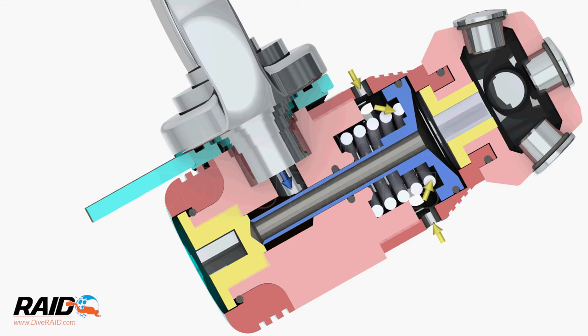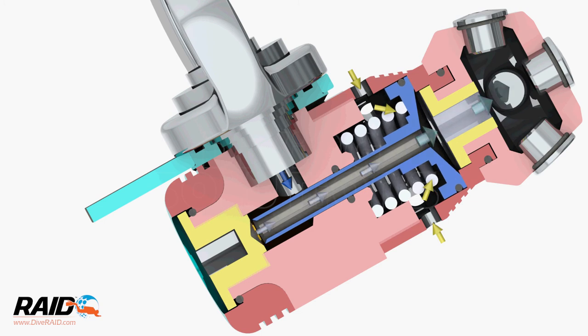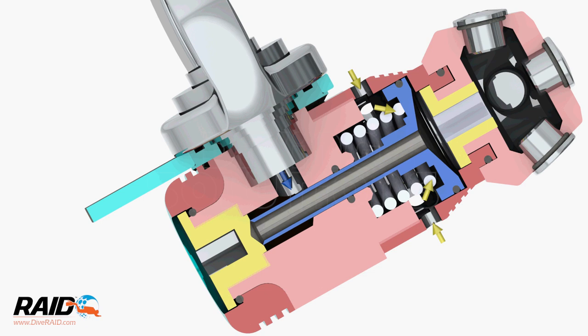When the diver stops inhaling, the pressure on the back of the piston increases and the piston closes against the high pressure seat, and gas flow stops.